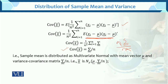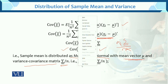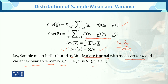Therefore, the covariance of x̄ equals Σ/n. Hence, the sample mean is distributed as multivariate normal with mean vector μ — as shown through the expectation — and variance-covariance matrix Σ/n — as shown through the covariance derivation. That is, x̄ is distributed as multivariate normal with mean vector μ and variance-covariance matrix Σ/n.